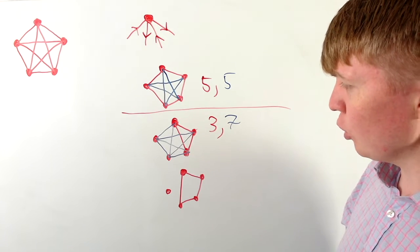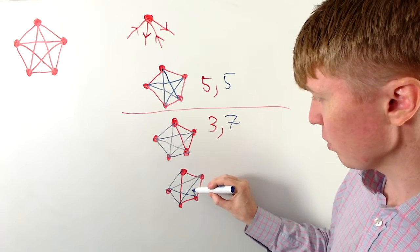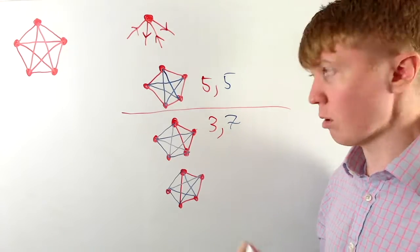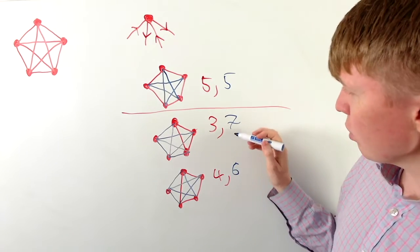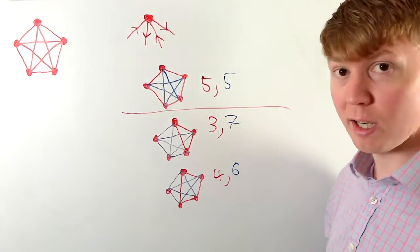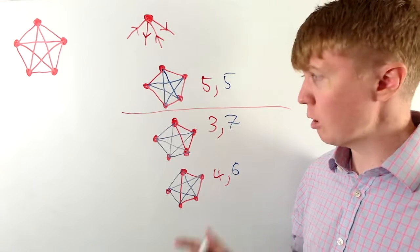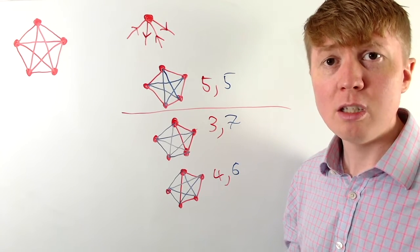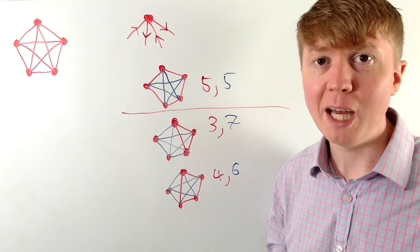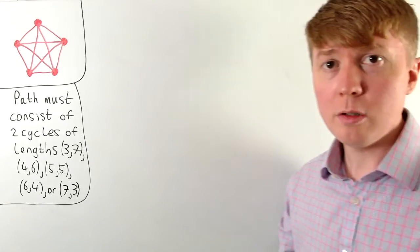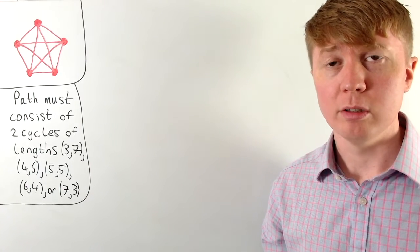We could have a cycle of length four followed by a cycle of length six, which uses up all the edges. So we can do three and seven, five and five, and four and six. Of course we could also begin with seven followed by three, or six followed by four. This splitting into different cases will allow us to calculate the total number of different ways of drawing this graph, with each step more manageable. First we'll count all the ways of doing this with a cycle of length three followed by a cycle of length seven.